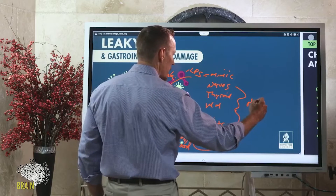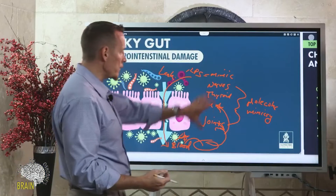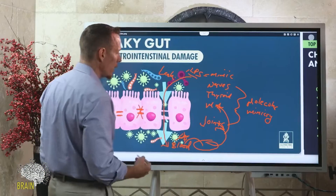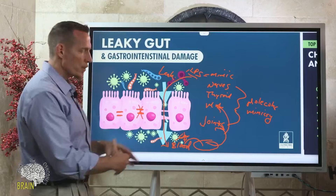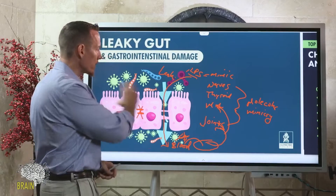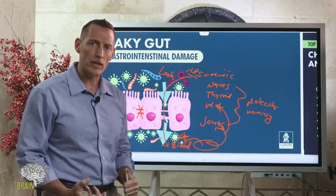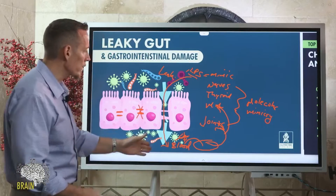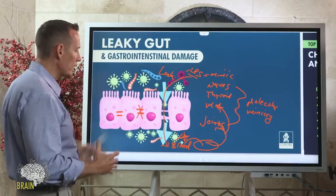This process is called molecular mimicry. Your immune system ends up attacking your joints and muscles because it confuses those tissues for the bacterial or fungal toxin. Your gut is supposed to be a quarantined area — it should only selectively allow nutrients and healthy things into the bloodstream. But when the gut is leaking, those toxins breach into your bloodstream, creating the molecular mimicry process that wreaks havoc on the body and creates chronic inflammation.